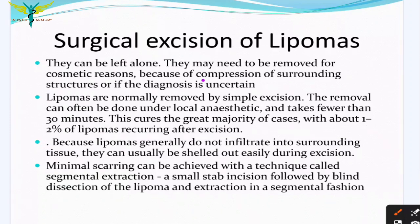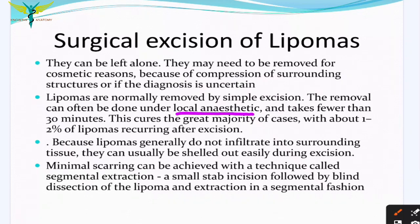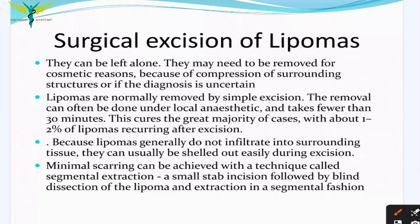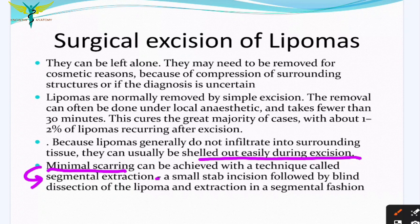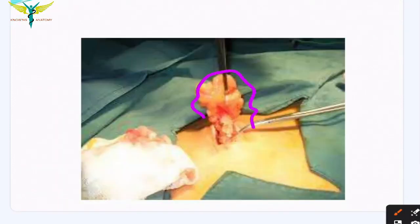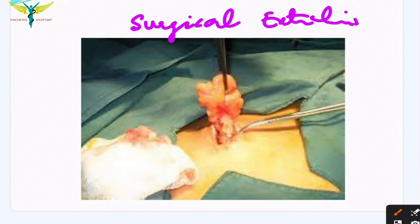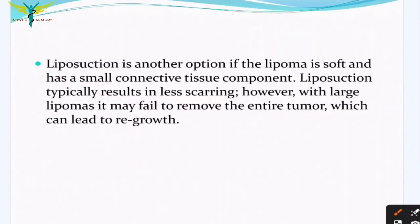Lipomas can be left alone but may need to be removed for cosmetic reasons or due to compression of surrounding structures. Lipomas are normally removed by simple excision under local anesthesia, which takes fewer than 30 minutes. In about 1 to 2 percent of cases there is a chance of recurrence. Lipomas generally do not infiltrate surrounding tissue, which is why they can be shelled out easily. Minimal scarring results from a technique called segmental extraction, where a small stab incision is made, followed by blind dissection and segmental extraction of the lipoma.